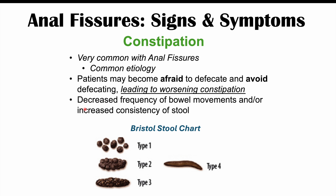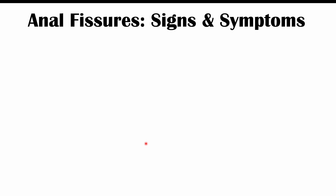Constipation refers to decreased frequency of bowel movements and/or increased consistency of stool. Looking at the Bristol stool chart, type 4 stool is normal, and types 1, 2, and 3 are considered constipation.